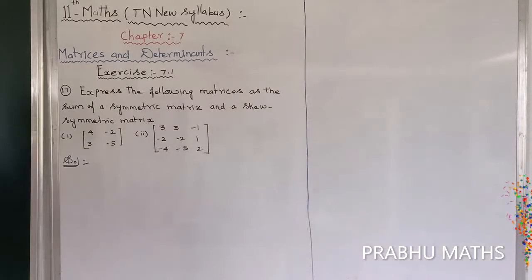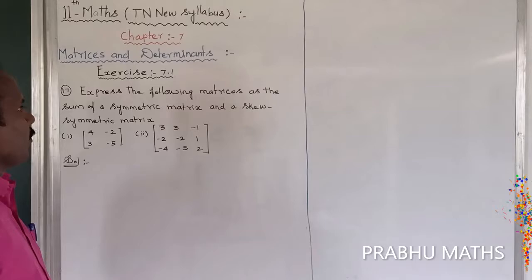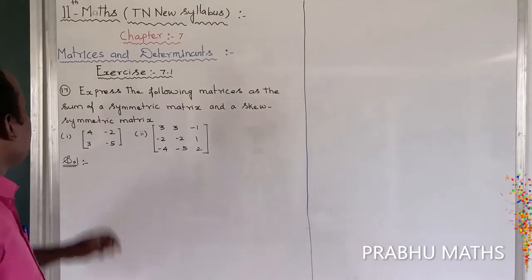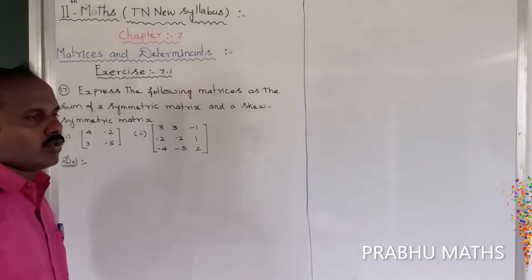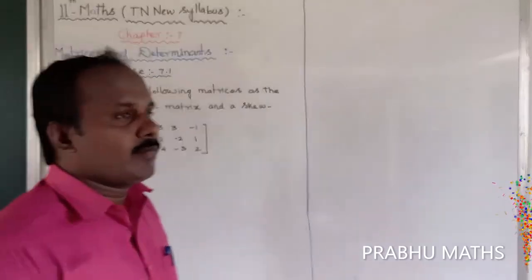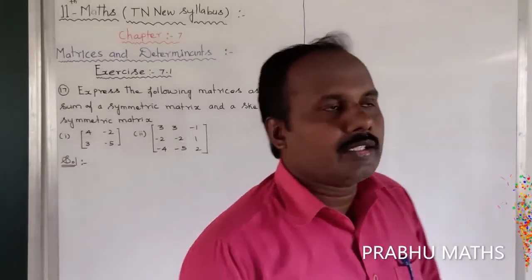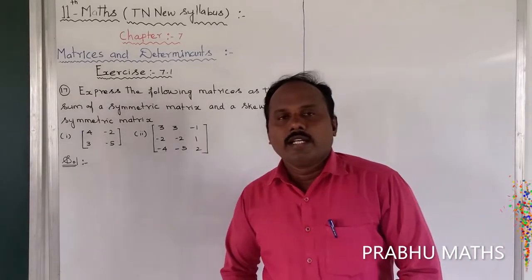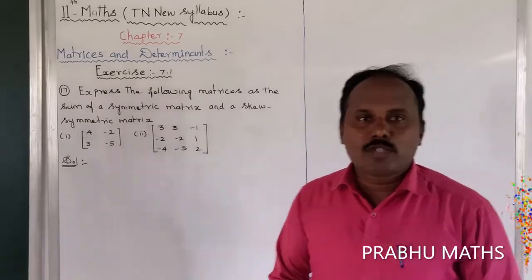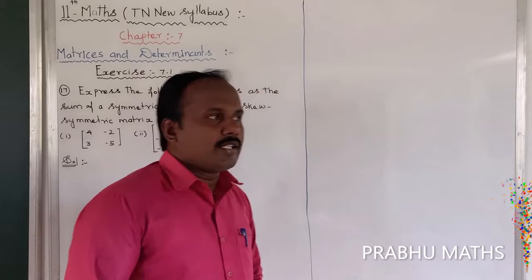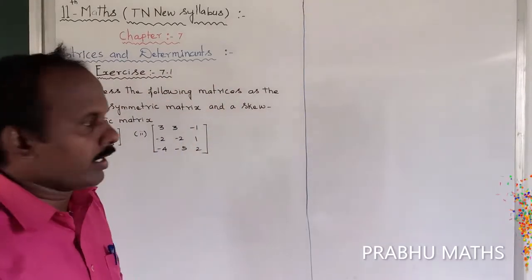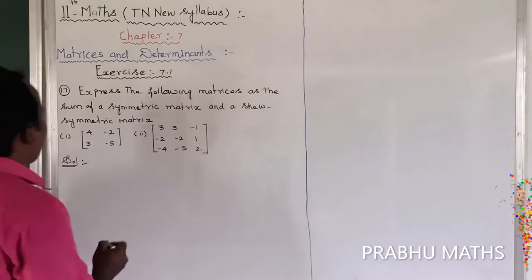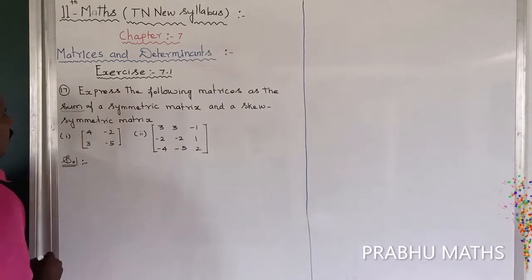Express the following matrices as the sum of the symmetric matrix and the skew-symmetric matrix. We already studied that symmetric means A is equal to A transpose, and skew-symmetric means A transpose is equal to minus A. This problem is about expressing A as a sum of a symmetric and a skew-symmetric part.